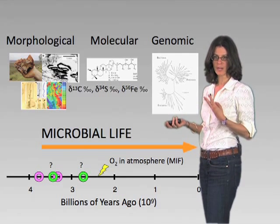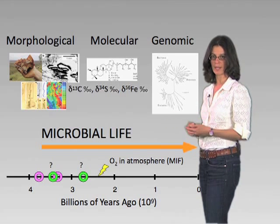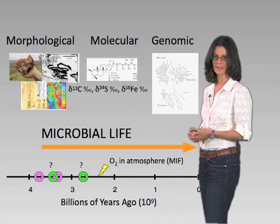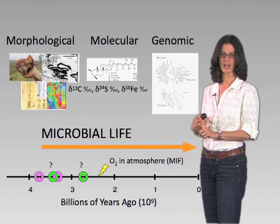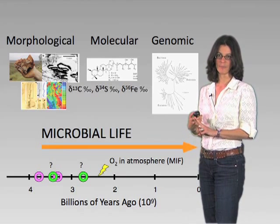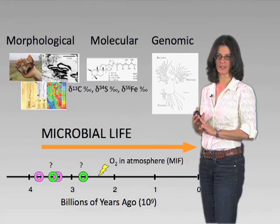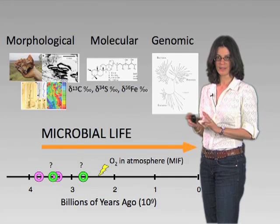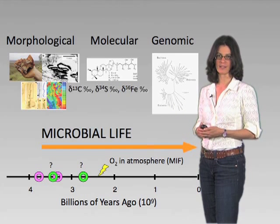There are three primary ways we can gain insight into the microbiology of the past: through using either morphological, molecular, or genomic — which is of course a form of molecular — biosignatures. And these are very different in what they can tell us.